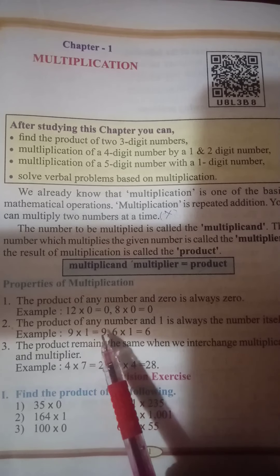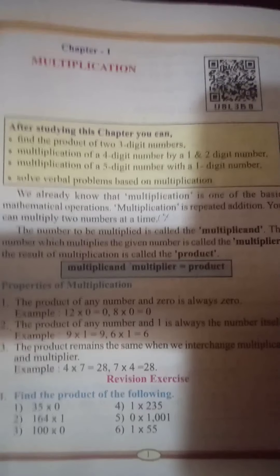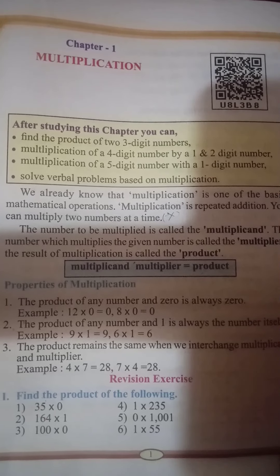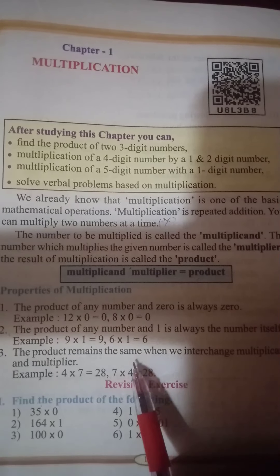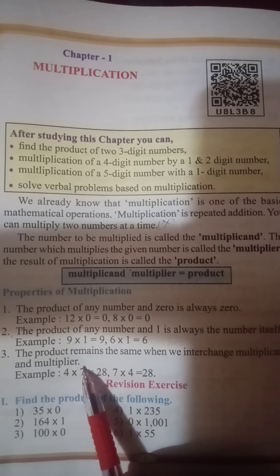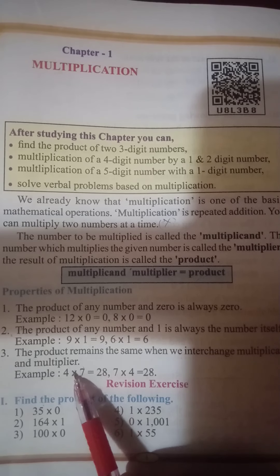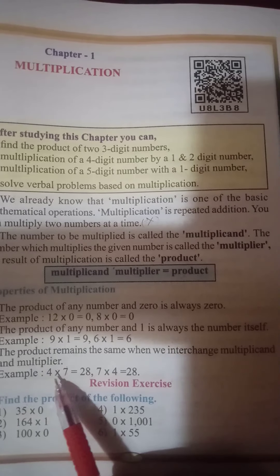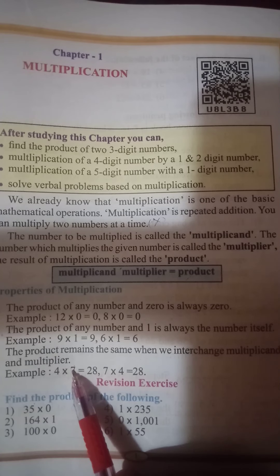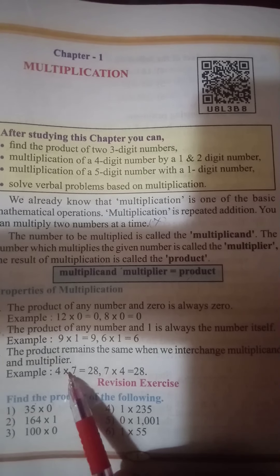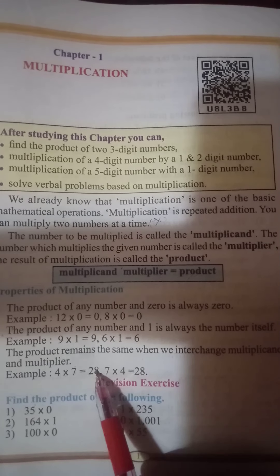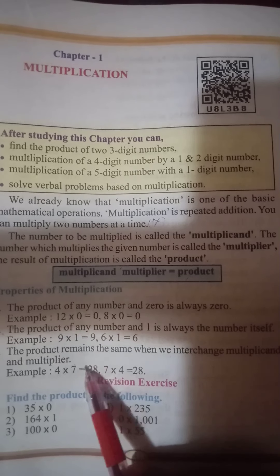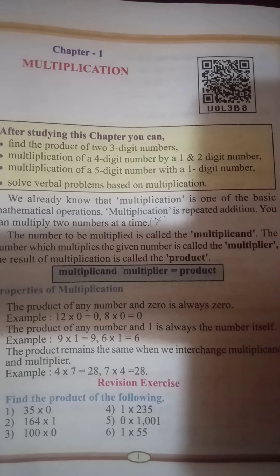Third property: the product remains the same when we interchange the multiplicand and the multiplier. This is the commutative property of multiplication.